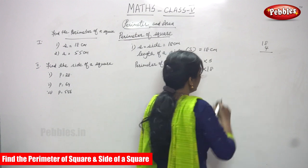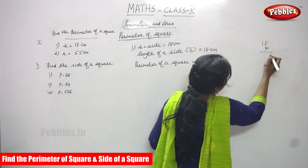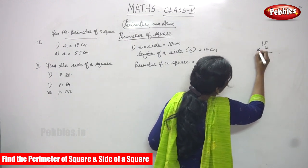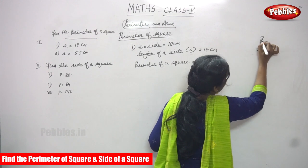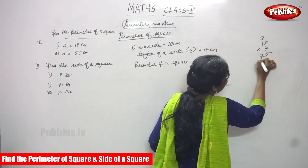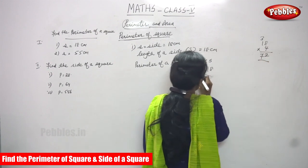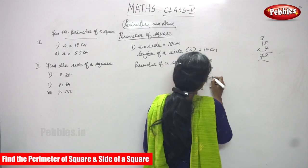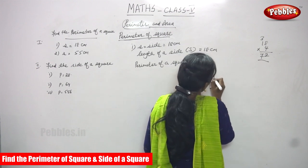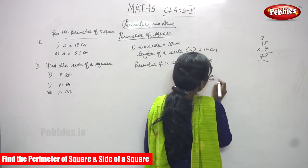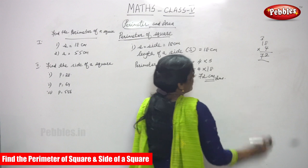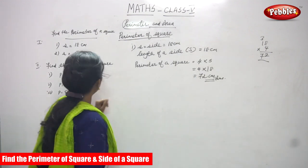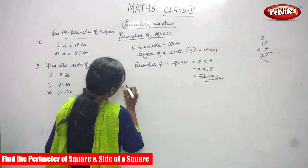Substitute the value of side: 18 into 4. Multiply 4 into 18. 8 fours are 32, carry 3. 1 plus 4 is 4, plus 3 is 7. The answer is 72. The perimeter of a square — write only the units — 72 cm is the right answer for the question.